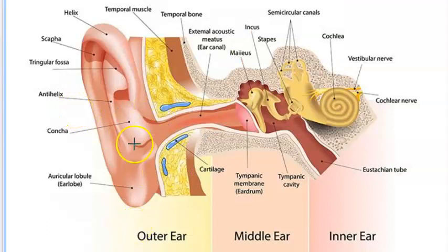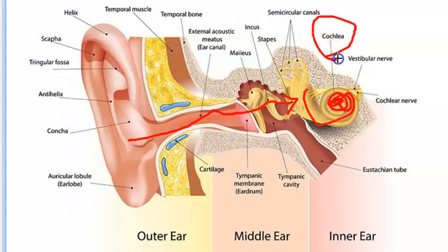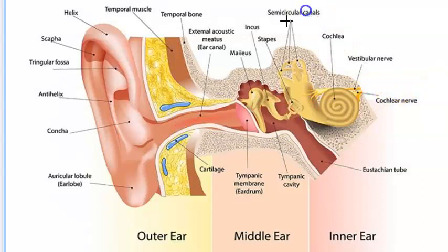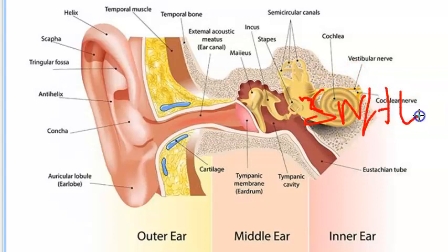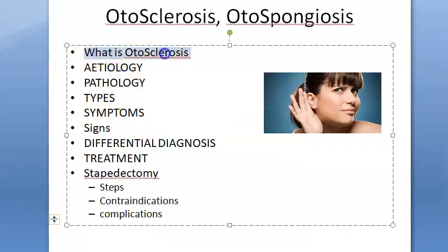The sound should be conducted and passed on to the inner ear — the cochlea — which does the hearing and sends impulses to the brain. But sound conduction will not happen properly, so these people will have conductive deafness. Along with this, there can be a little inner ear problem causing sensorineural hearing loss as well.